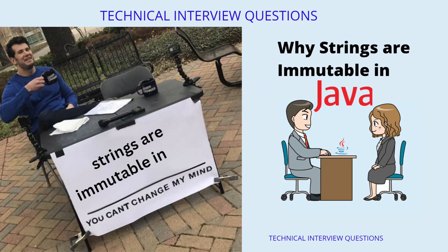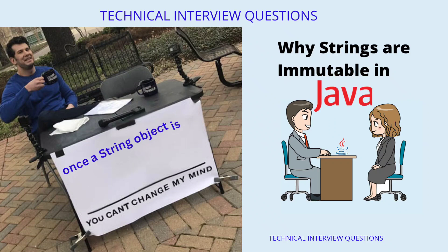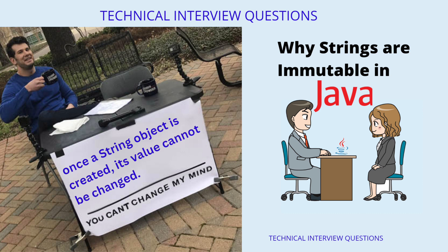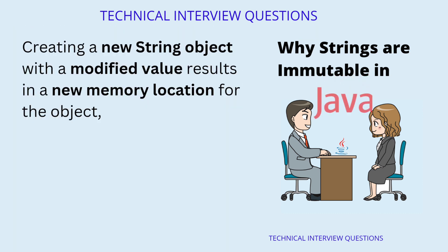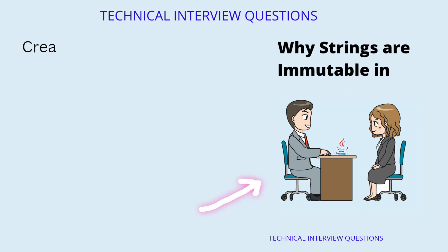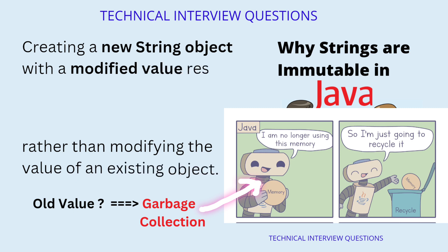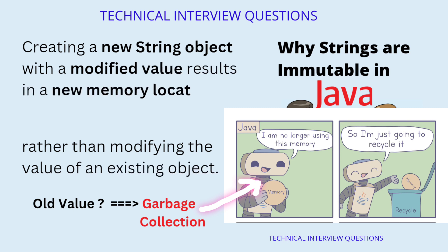Do you know why strings are immutable in Java? Strings are immutable in Java because once a string object is created, its value cannot be changed. Creating a new string object with a modified value results in a new memory location for the object, rather than modifying the value of an existing object.